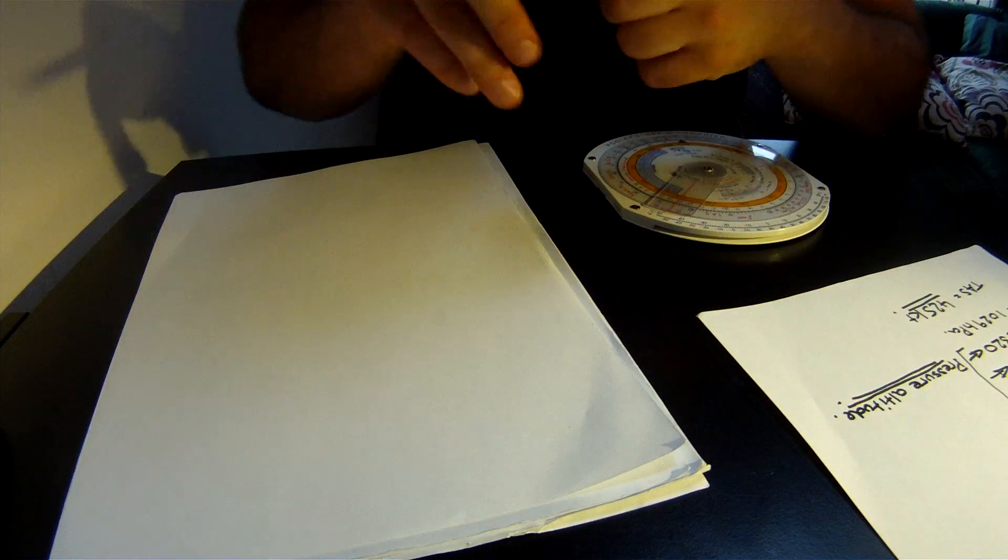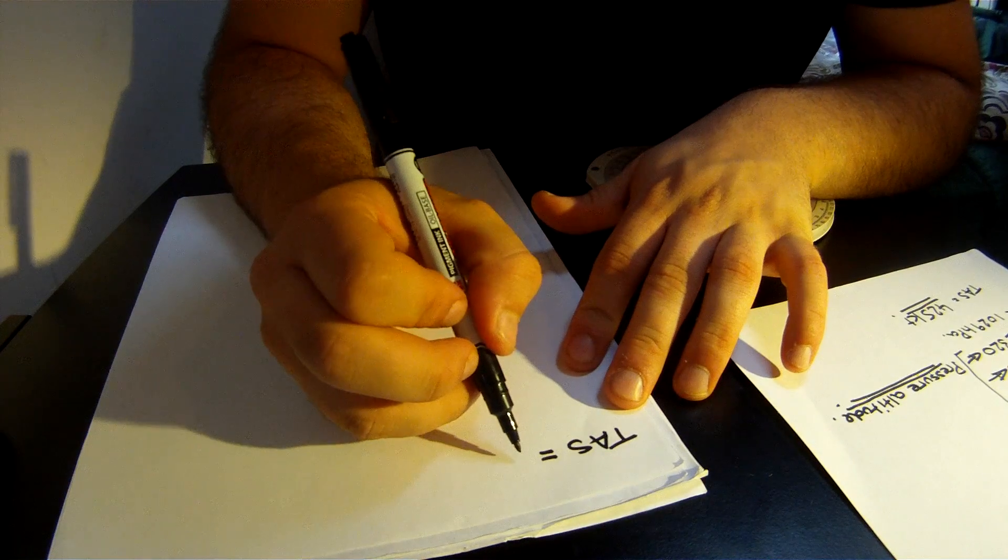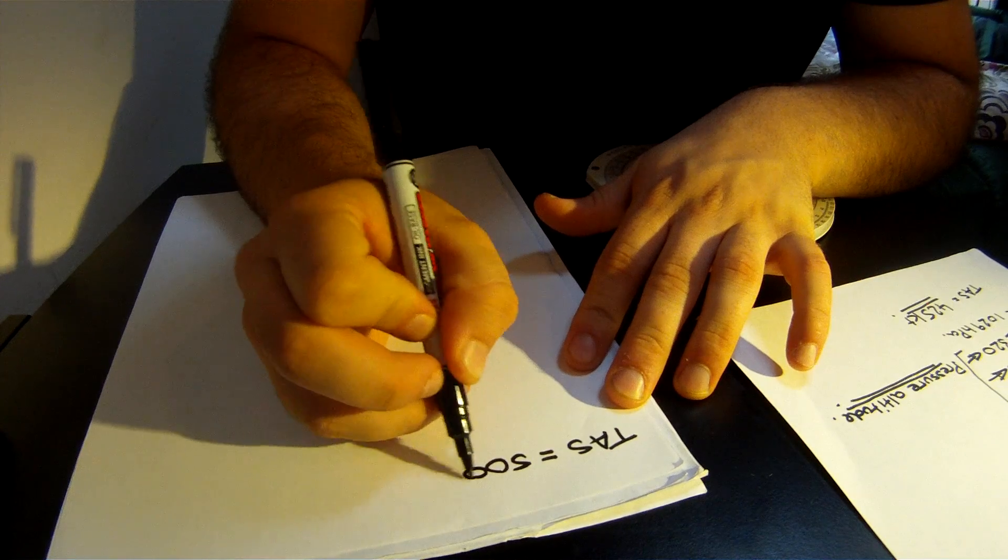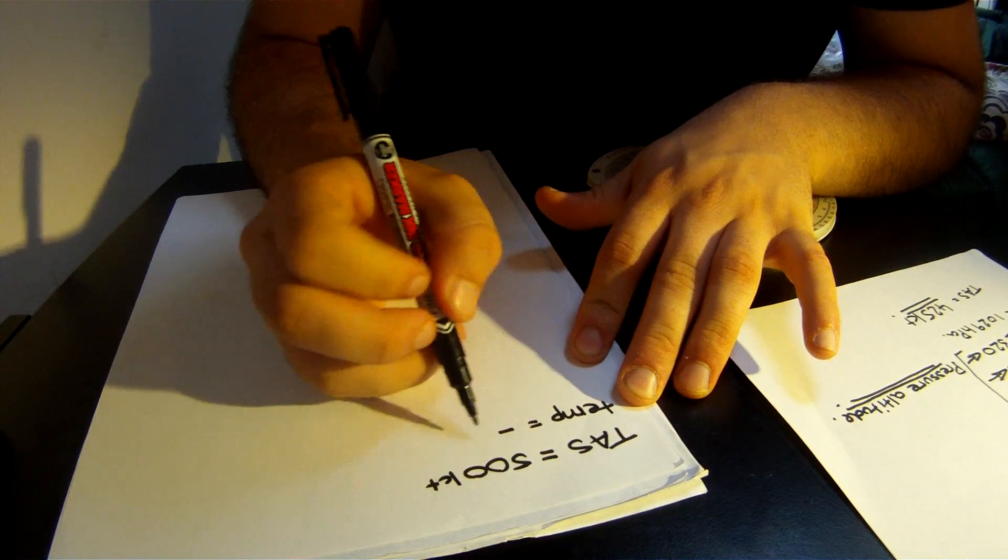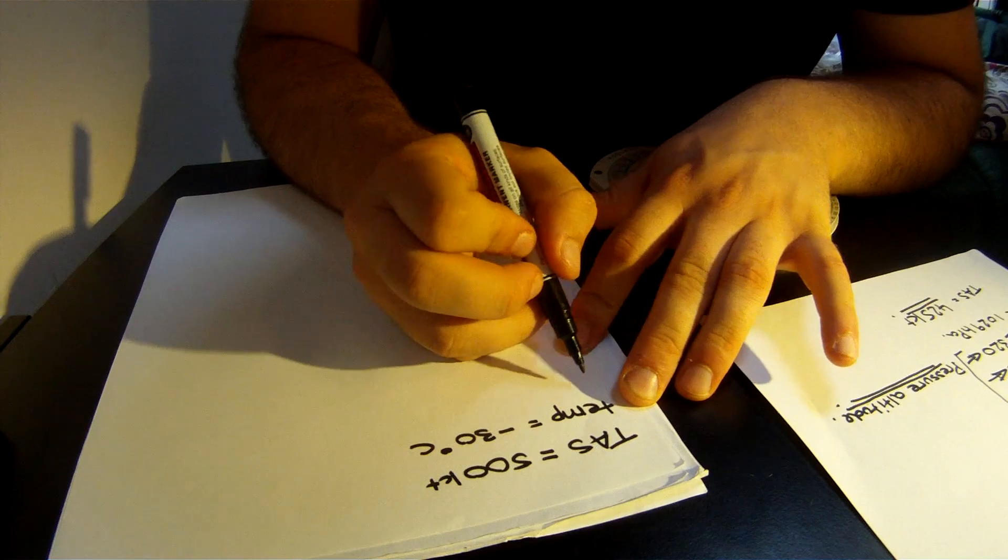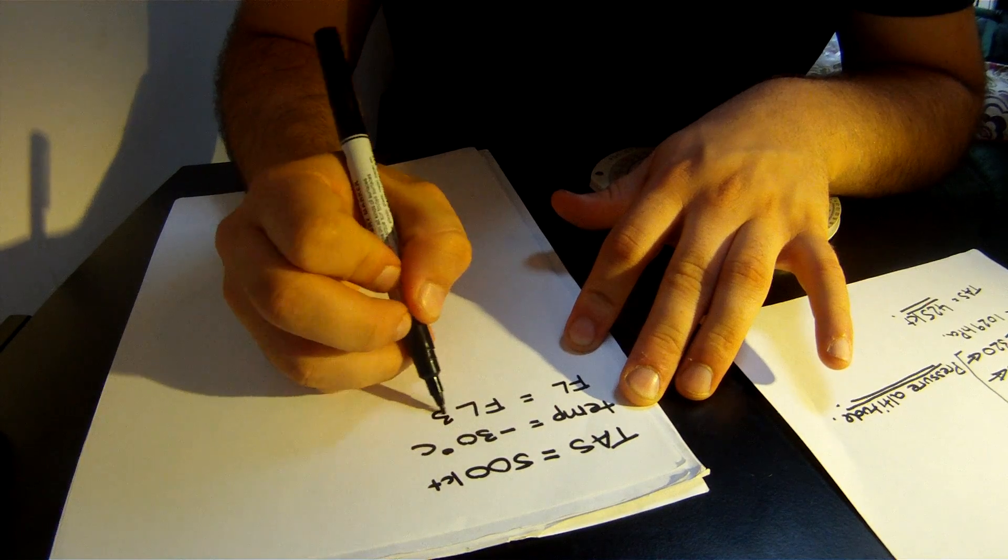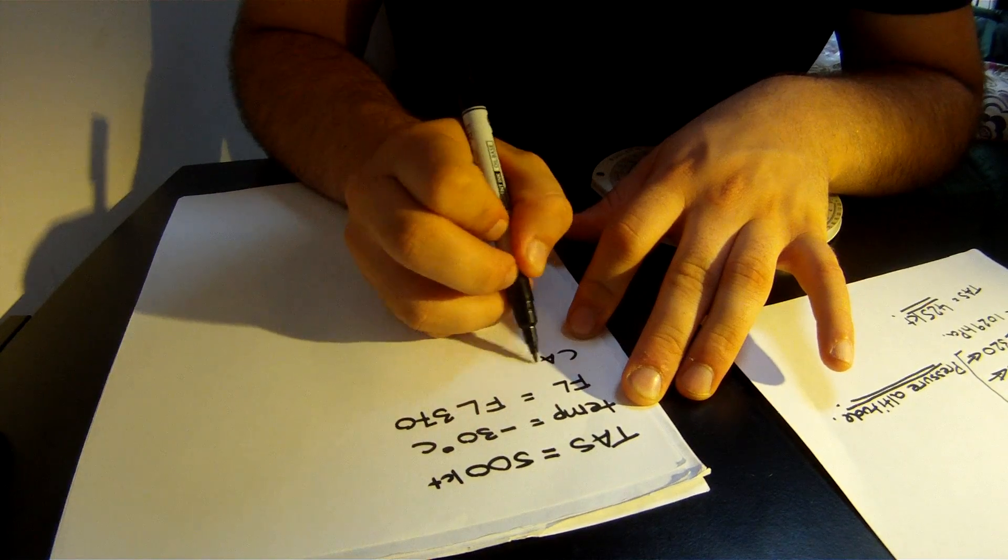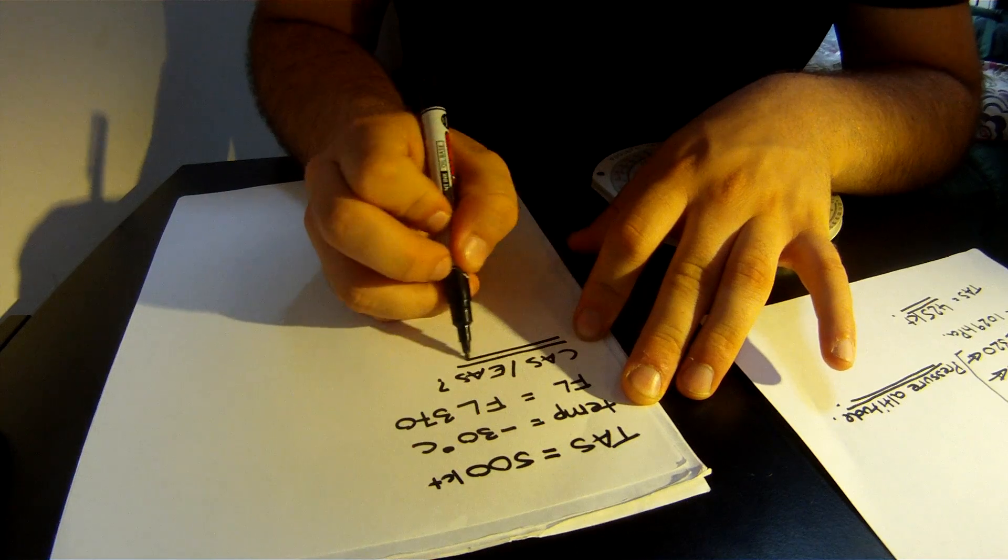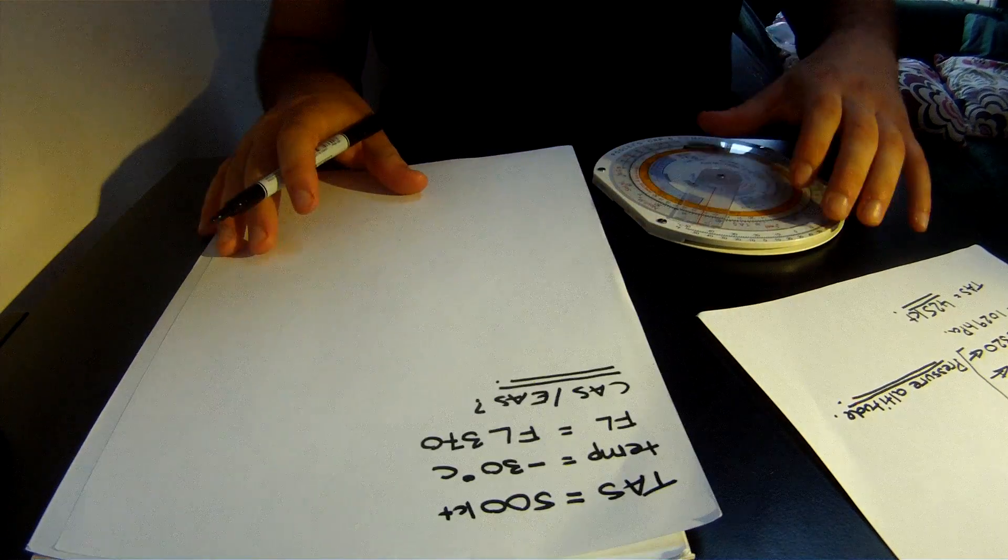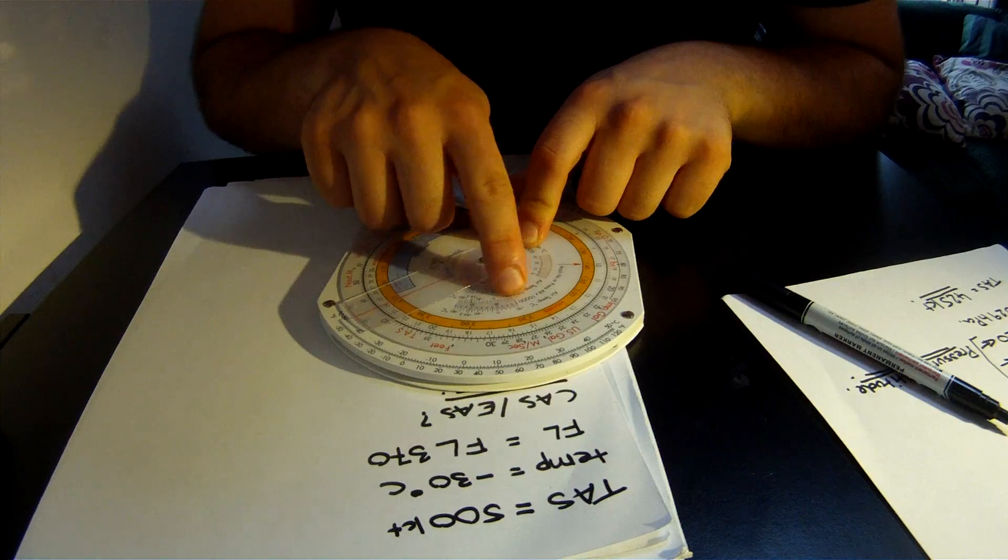Let's say instead they give us TAS, so true airspeed is 500 knots. You've got the temperature being minus 30 degrees Celsius. You've got flight level being flight level 370, and they ask you to find CAS or EAS, because in jet aircraft these two values are actually really similar.